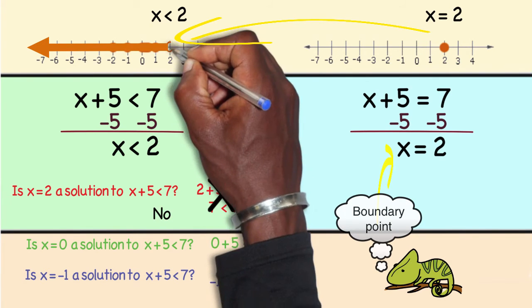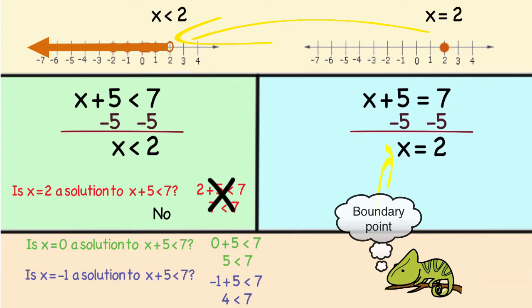A common way to represent the 2 as a boundary point is with an open circle. And that lets everyone know that every number below it according to the arrow is part of your solution. So the graph is the most accurate way to visually represent all the possible answers to an inequality.